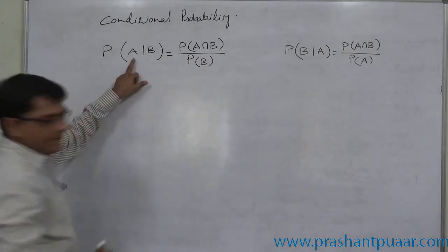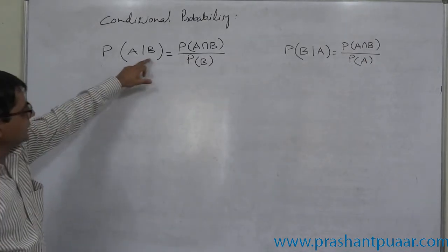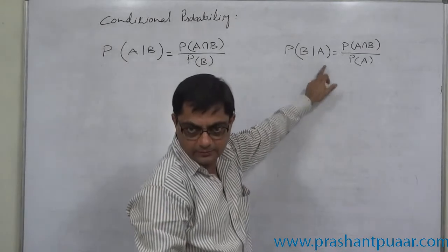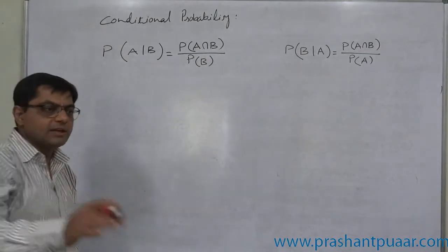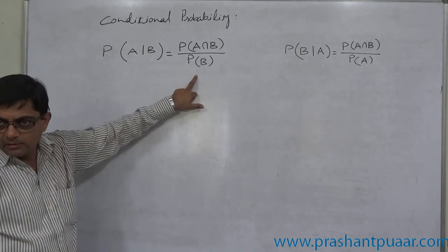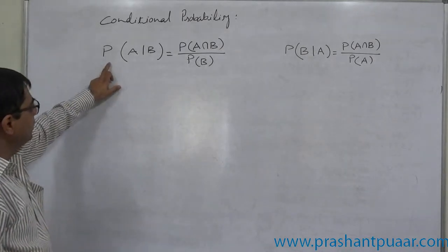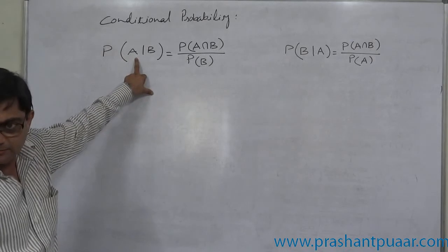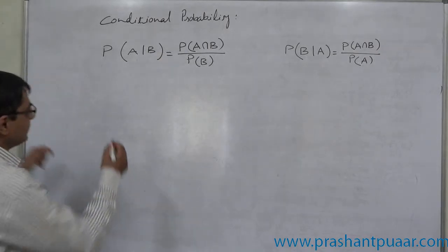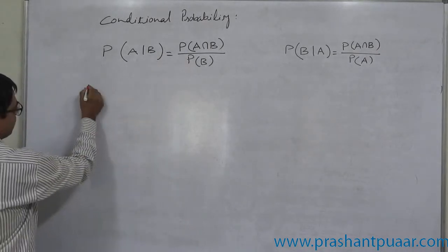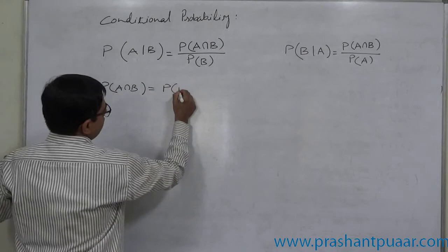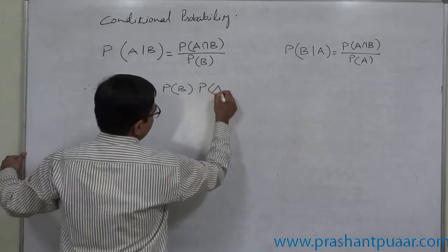In this case, A is a conditional event subject to the happening of B. Now, if we know the probability of happening of B and if we know the probability of conditional happening of A subject to B, then we can have the probability of A intersection B. That means this is a case of cross multiplication. Probability of A intersection B equals probability of B into probability of A given B.